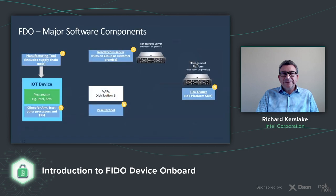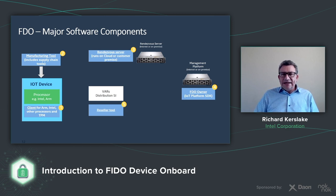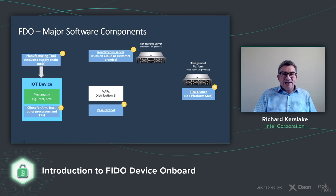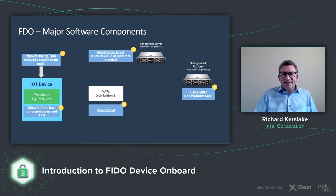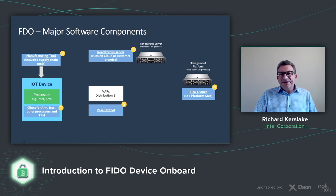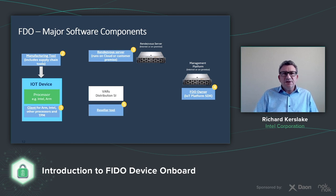In terms of the software, I'll show this because it sometimes helps people get a feeling of the different moving pieces. Stepping through number one through five: number one, there is a client piece of software that sits on the device you want to onboard. Whatever processor you have — whether it's ARM, Intel, or another processor — maybe you're using a TPM or a secure element, that agent or client can reside on that device. Number two, we talked about the manufacturing tool, which is really about creating that ownership voucher. It's about putting the credentials into the device at the point of manufacture or programmation — maybe it's a VAR or distributor that does this, it doesn't have to be the manufacturer.